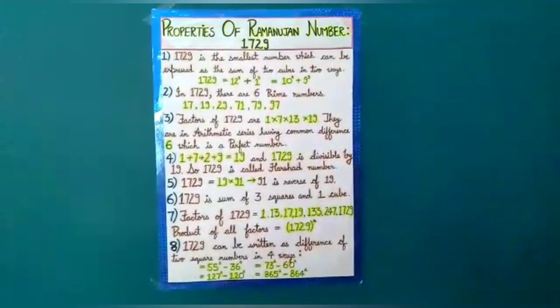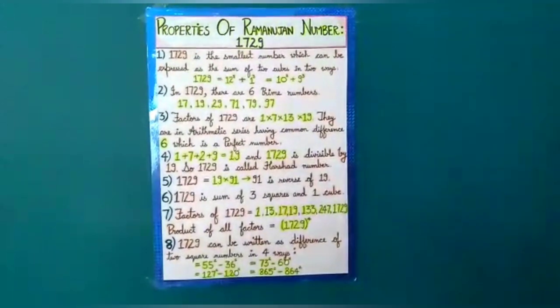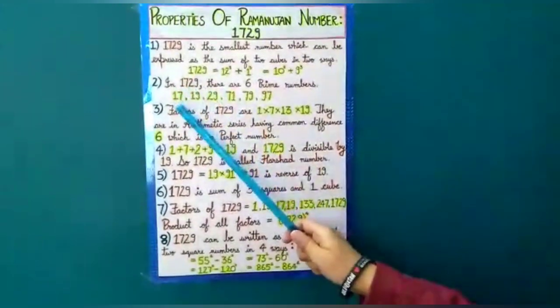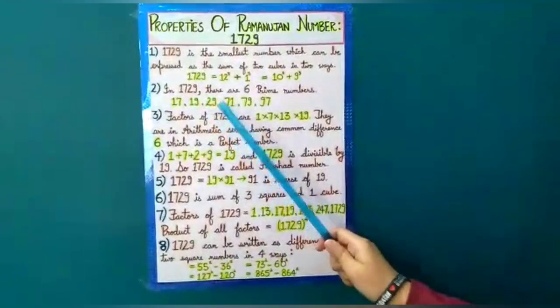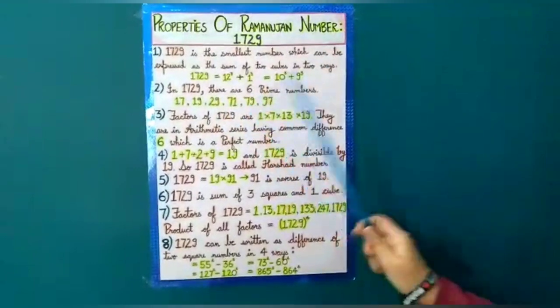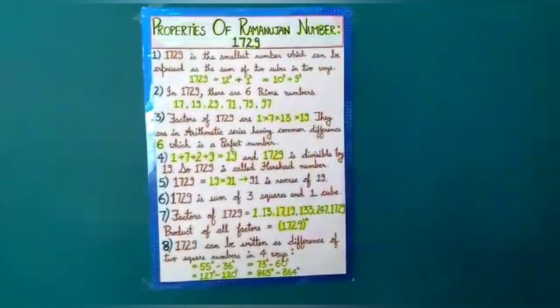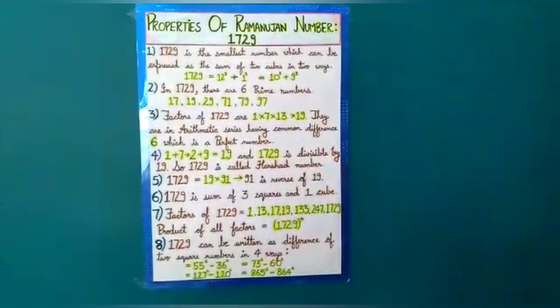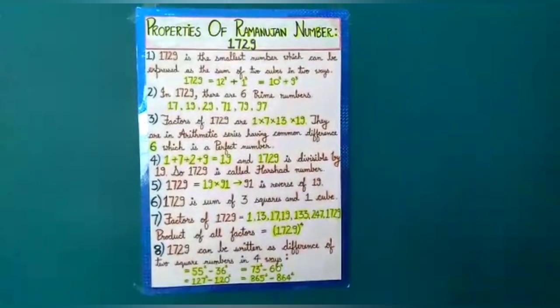The second property is that in 1729, there are six prime numbers, that is 17, 19, 29, 71, 79 and 97.